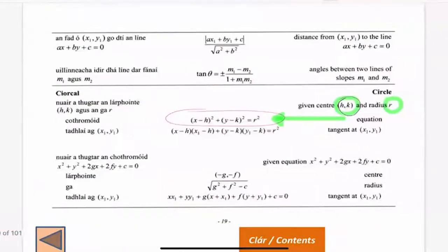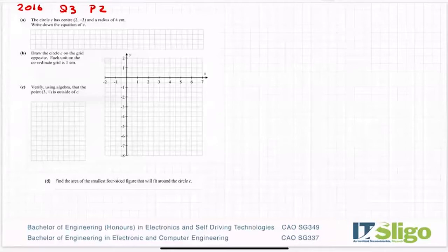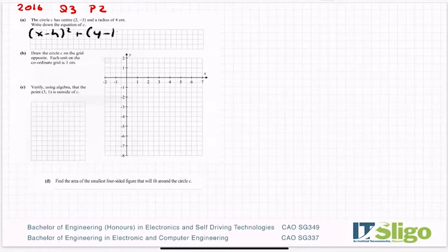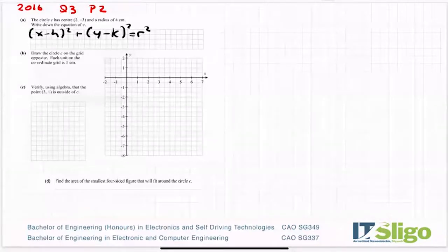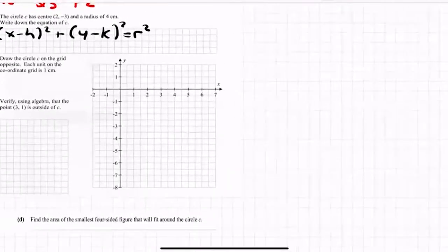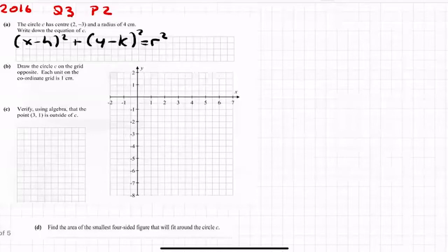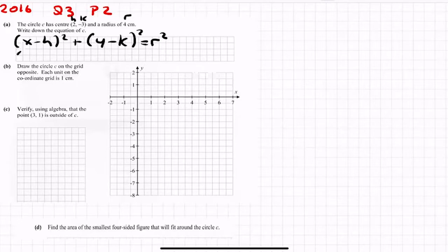So I am going to write that down here. (x - h)² + (y - k)² = r². That's taken straight from your log tables. Your center is (2, -3), so you label your center as hk and your radius is 4. So that becomes (x - 2)² + (y - (-3))² = 4².